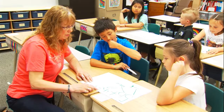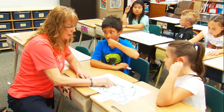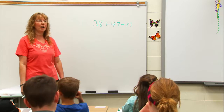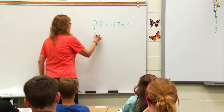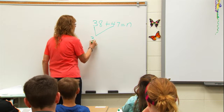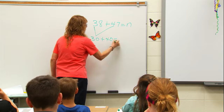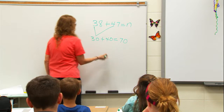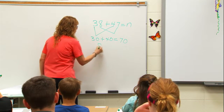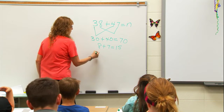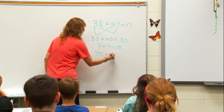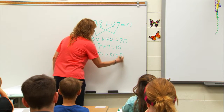We can build on students' understanding of numbers to use different strategies, such as breaking up numbers. Breaking numbers apart using their place value makes adding easier. We're going to add 30 and 40 — the teacher adds the tens first — to give us 70. Then we add 8 and 7 — she adds the ones — to give us 15. Then we add 70 plus 15 to give us 85.